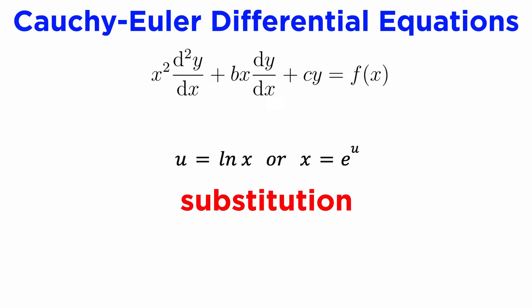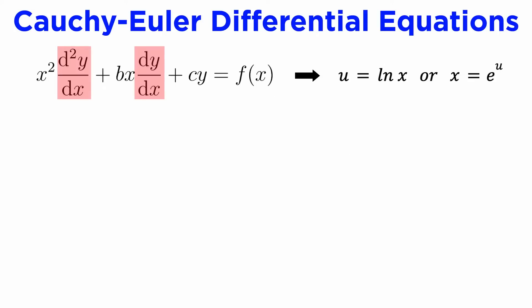The trick to solving Cauchy-Euler DEs is to use the substitution u equals natural log of x. This time we are changing the independent variable x to a new independent variable u, and the dependent variable will still be y. It takes a little work to get the expressions for the derivatives in terms of u.